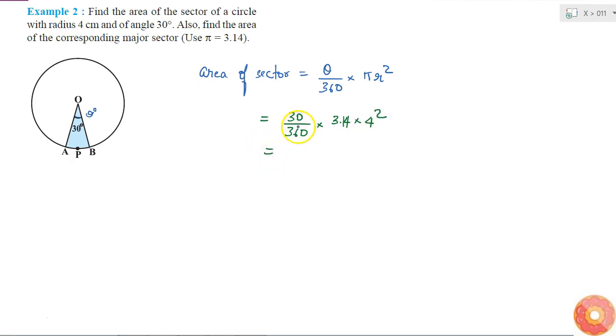30 by 360 is the same as 1 by 12. So 1 by 12 into 3.14 into 4 squared is 16. I know 12 is 3 into 4 and 16 is 4 squared.